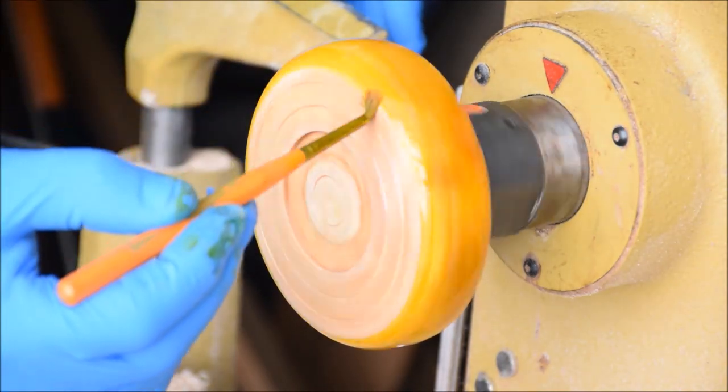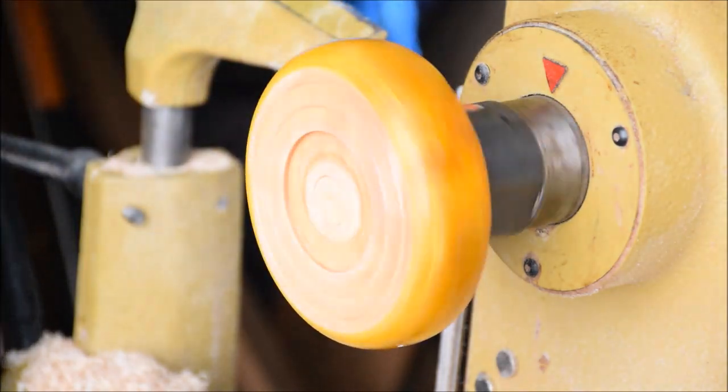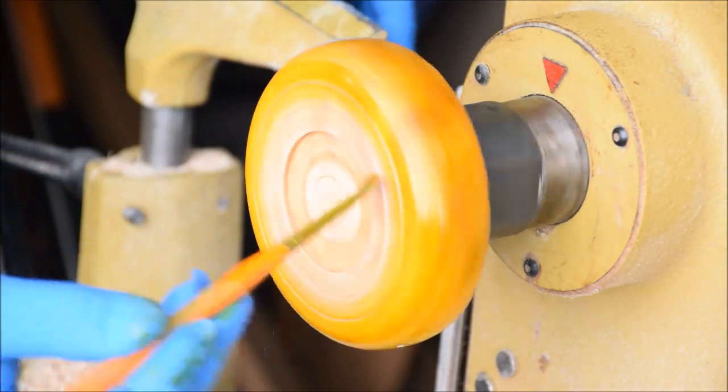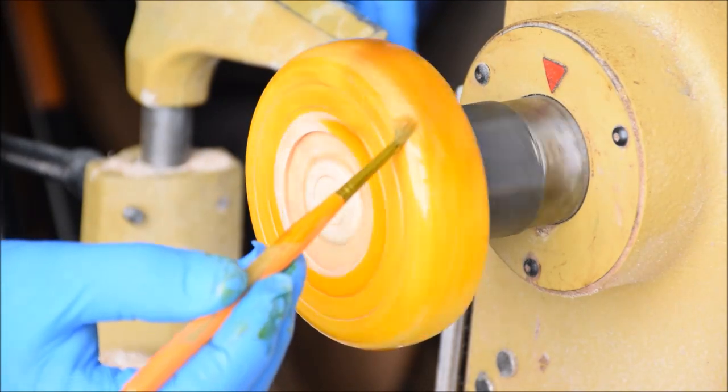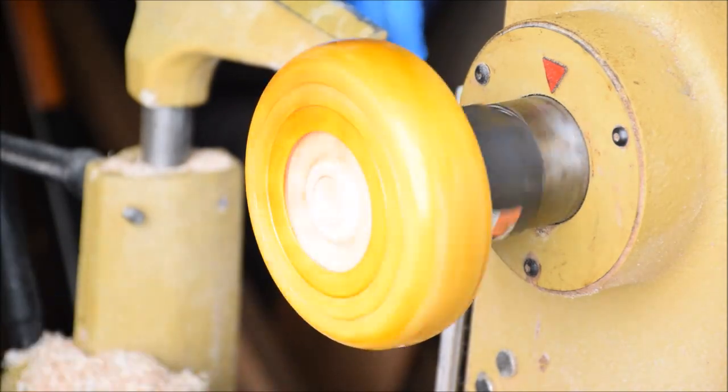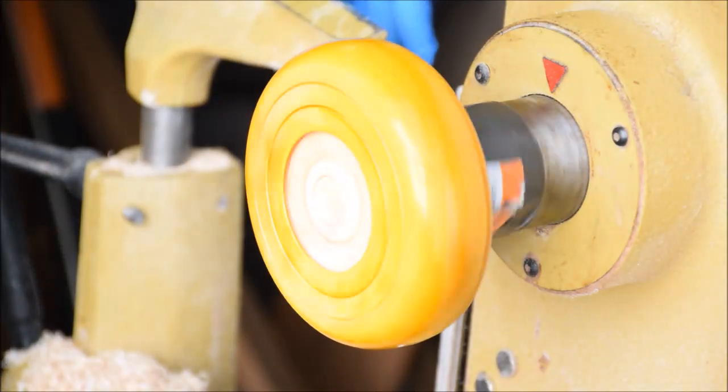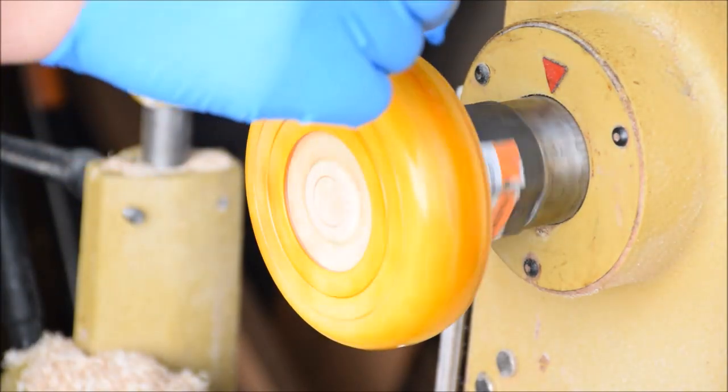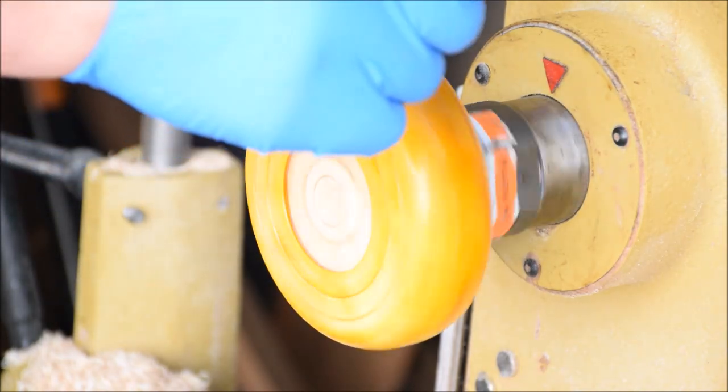I'm just giving a full coat of yellow over the whole bottom side here. And like I said I'm going to be turning this into, hopefully if everything works out, a Warriors-inspired bowl. So, Oakland, Golden State Warriors. Go Dubs!